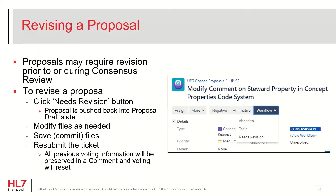To do so, click the Workflow button and then the Needs Revision button from the top bar of the proposal. You can now make additional modifications to the content, save the changes, and resubmit the proposal. Revising a proposal aborts the current consensus review process — a record of the vote so far is made as a comment and the ticket must begin a new cycle from the proposal draft state. This triggers a fresh round of voting on the proposal after it is resubmitted and checked again for technical accuracy.